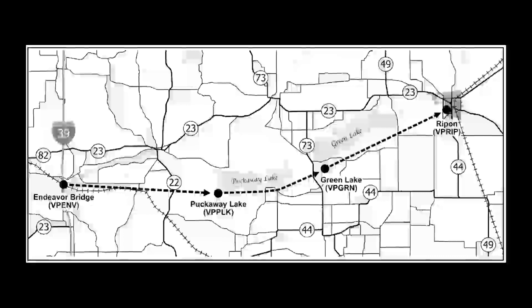If you're GPS equipped, you can fly directly to the specified VFR reporting point using its code from the map. You should arrive at the proper altitude and airspeed.